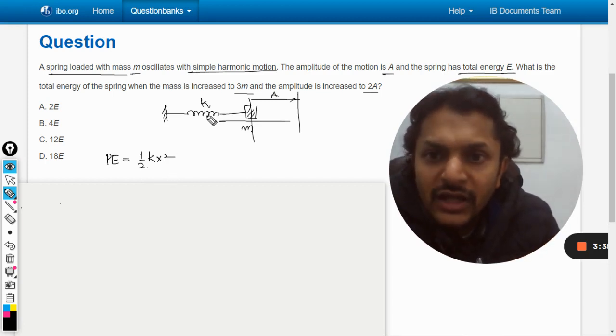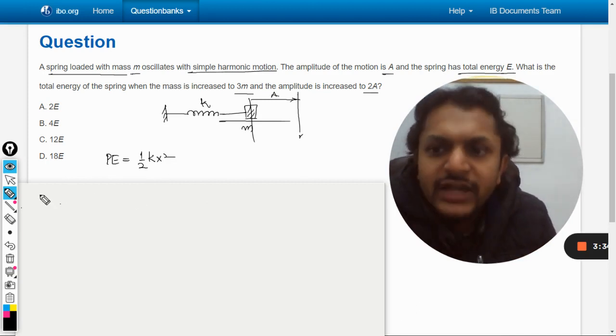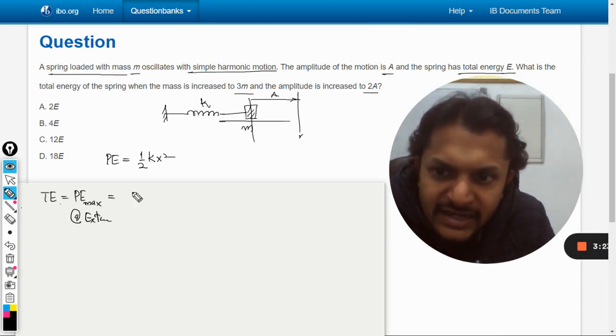Now if we talk about the extreme position, we know that mechanical energy is conserved. So the total energy is equal to the maximum potential energy at extreme positions, and it is equal to the maximum kinetic energy at mean position.